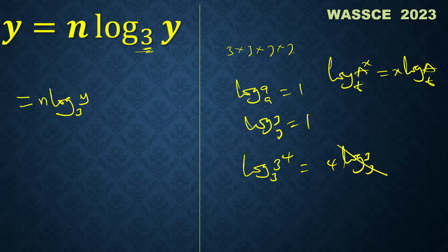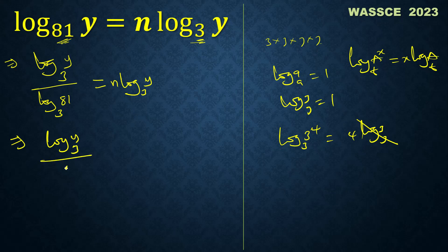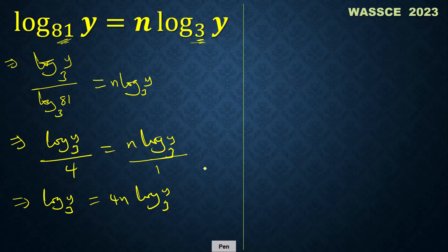My next step would be log y to base 3 over 4. So we can do cross multiplication. We have log y to base 3. Multiply by 4, this will be 4n log y to base 3.